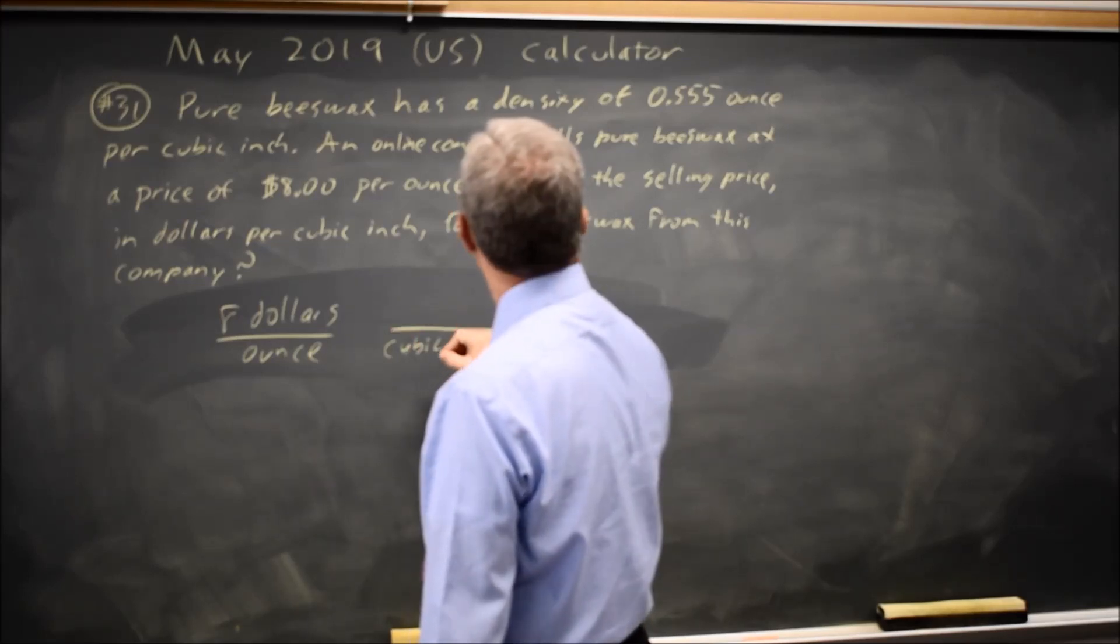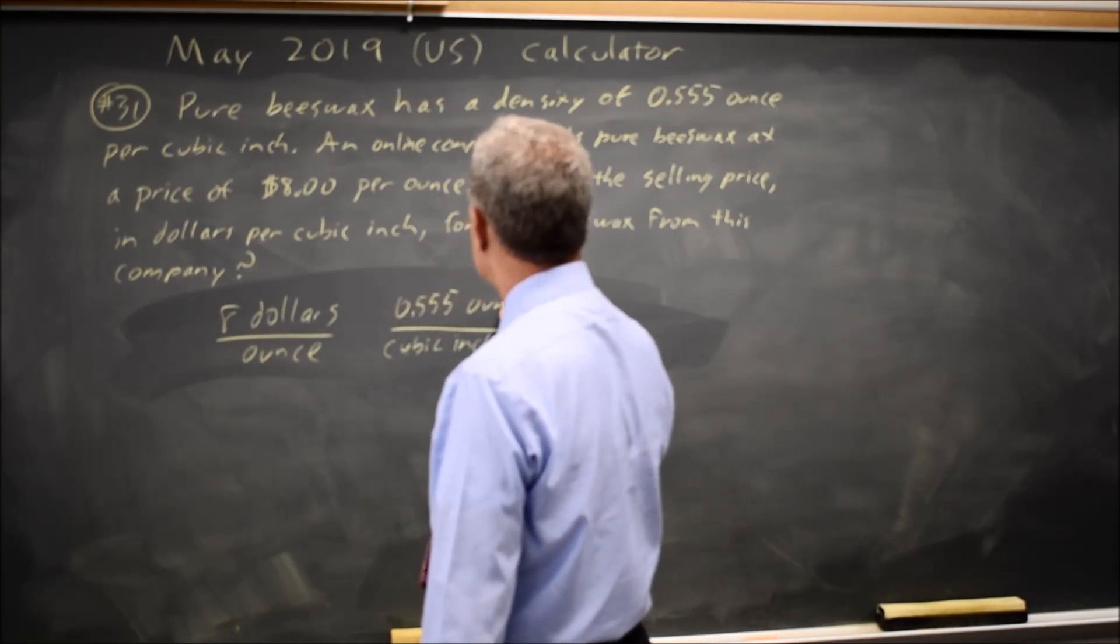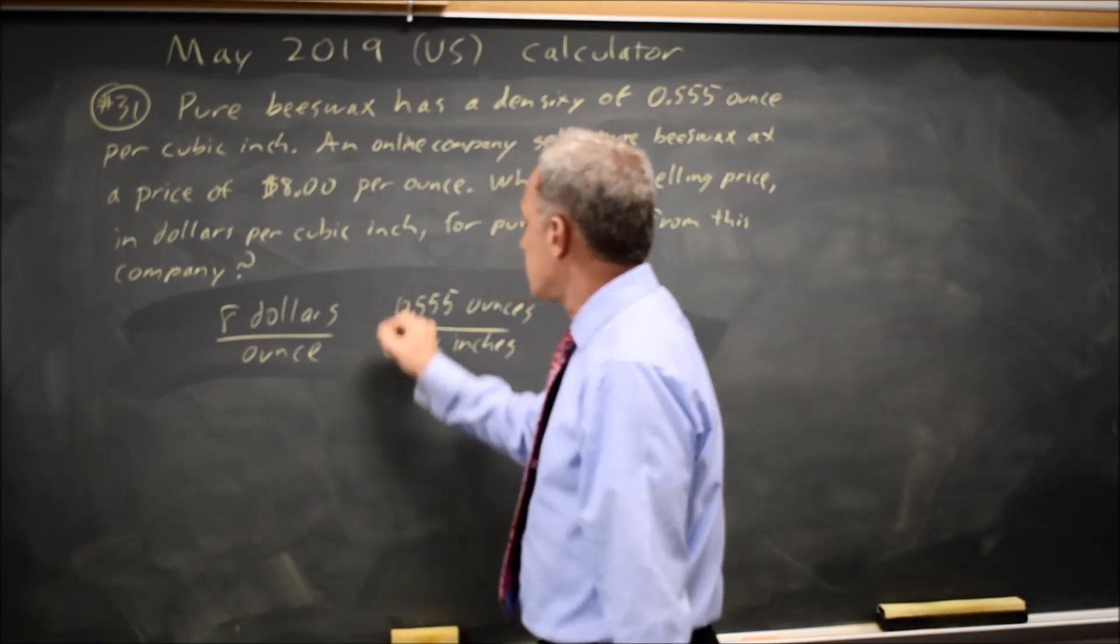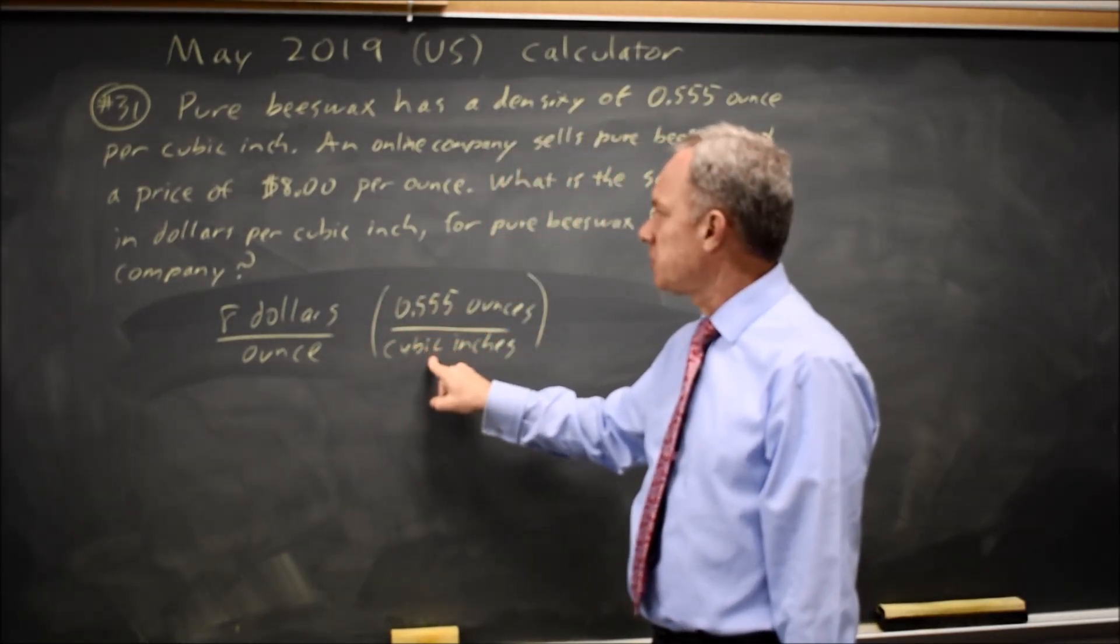But I know that it's 0.555 ounces per cubic inch, and since 0.555 ounces of beeswax equals one cubic inch of beeswax,